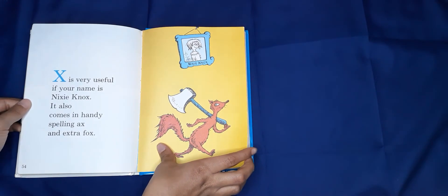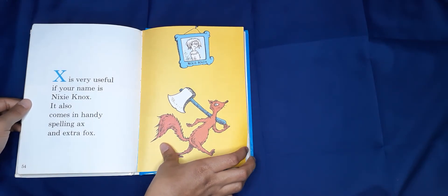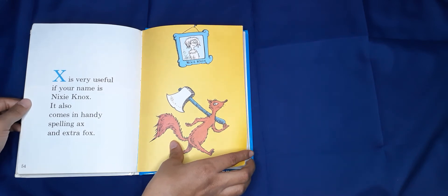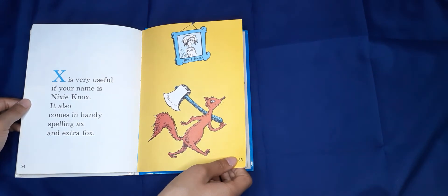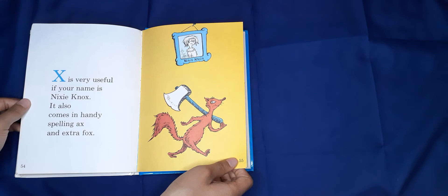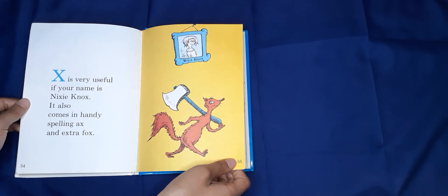X is very useful if your name is Nixie Knox. It also comes in handy when spelling X and extra fox.